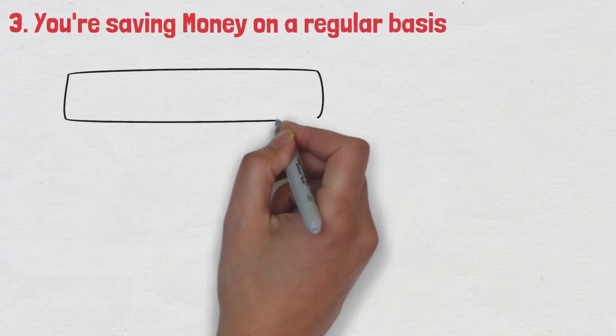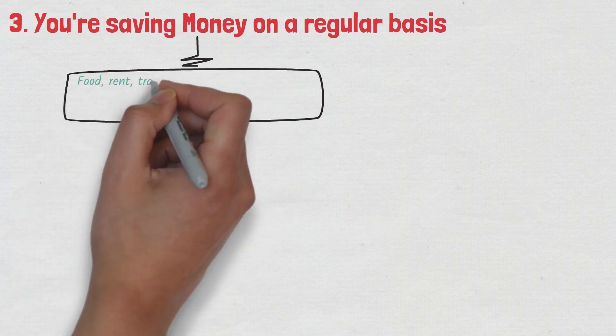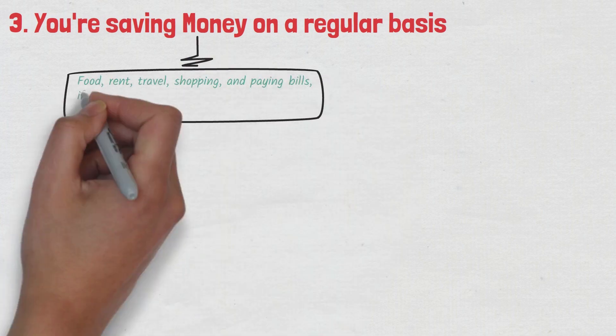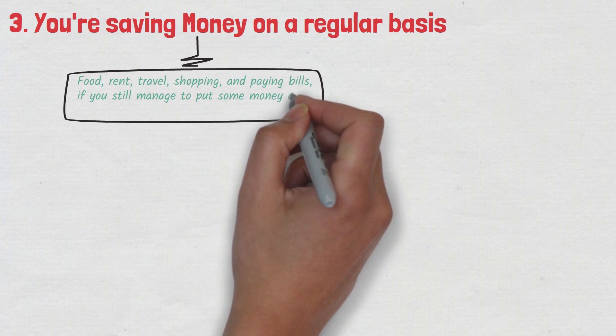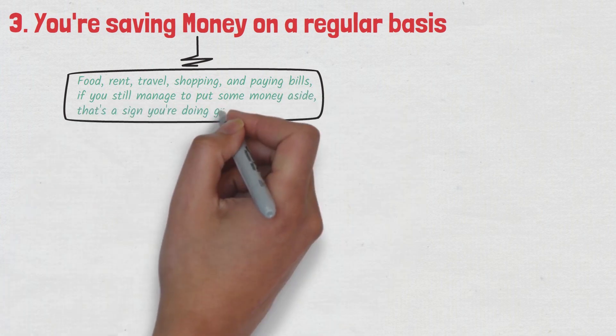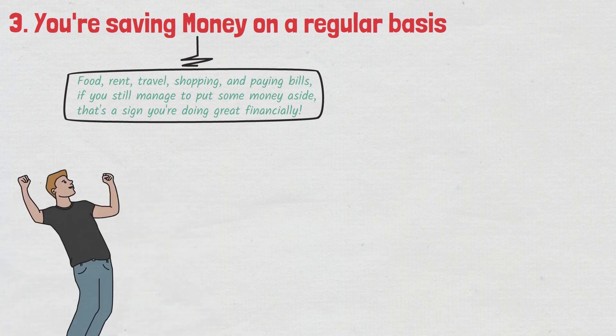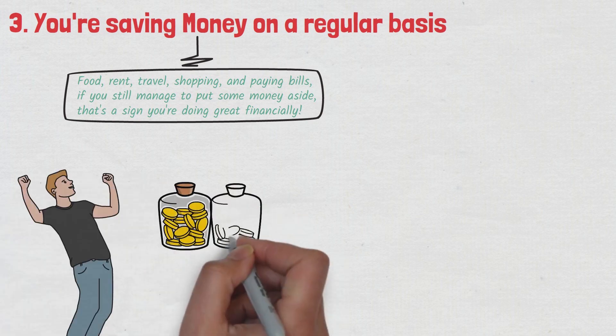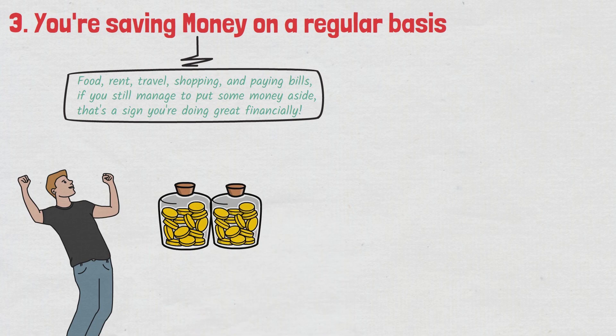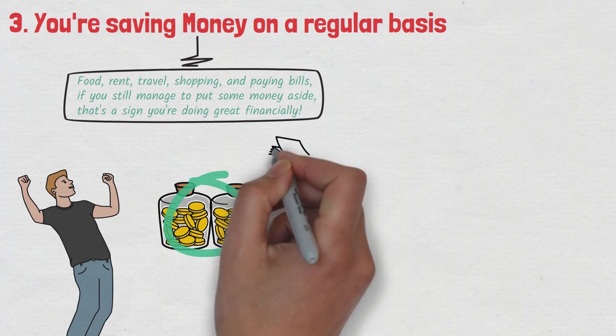Number three, you're saving money on a regular basis. After all the expenses like food, rent, travel, shopping, and paying bills, if you still manage to put some money aside, that's a sign you're doing great financially. Just think about it. You're meeting all your needs and still managing to put some cash away for the future. It's like having a secret stash of cookies that you can enjoy anytime you want. Only this time, it's money, not cookies.